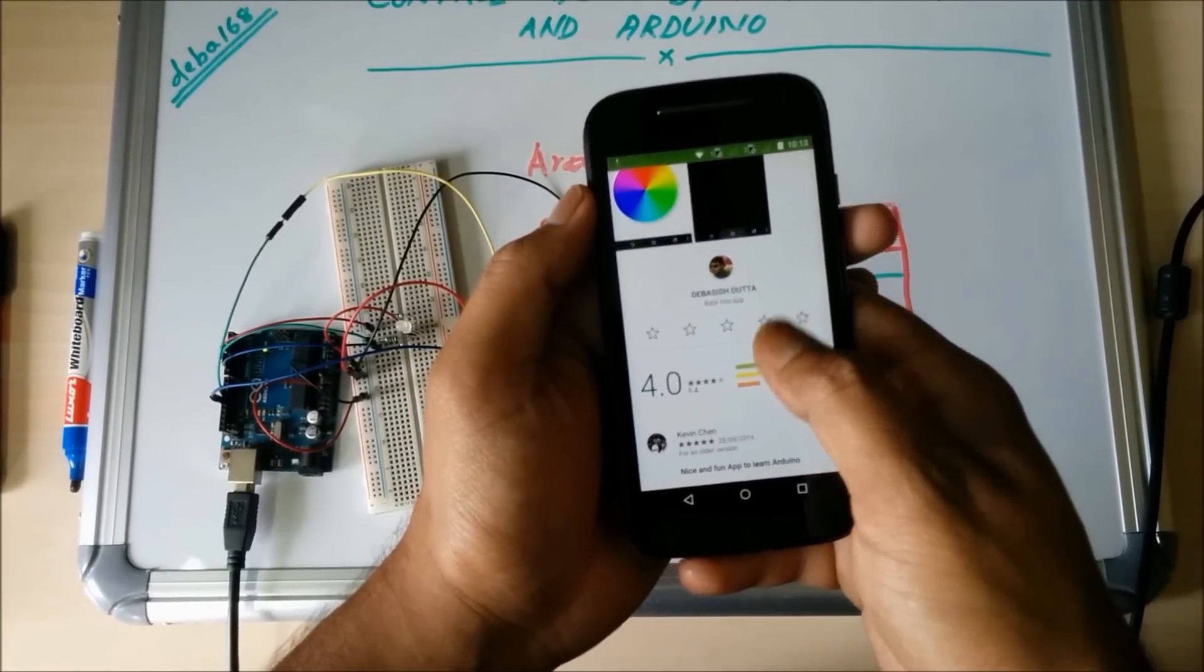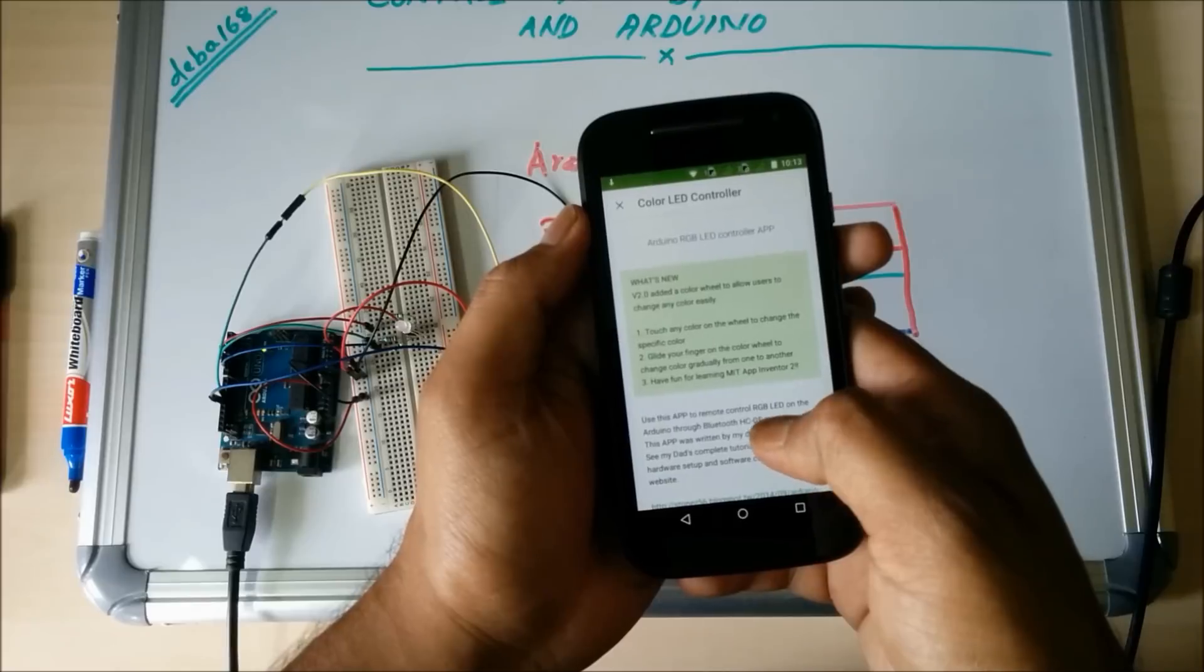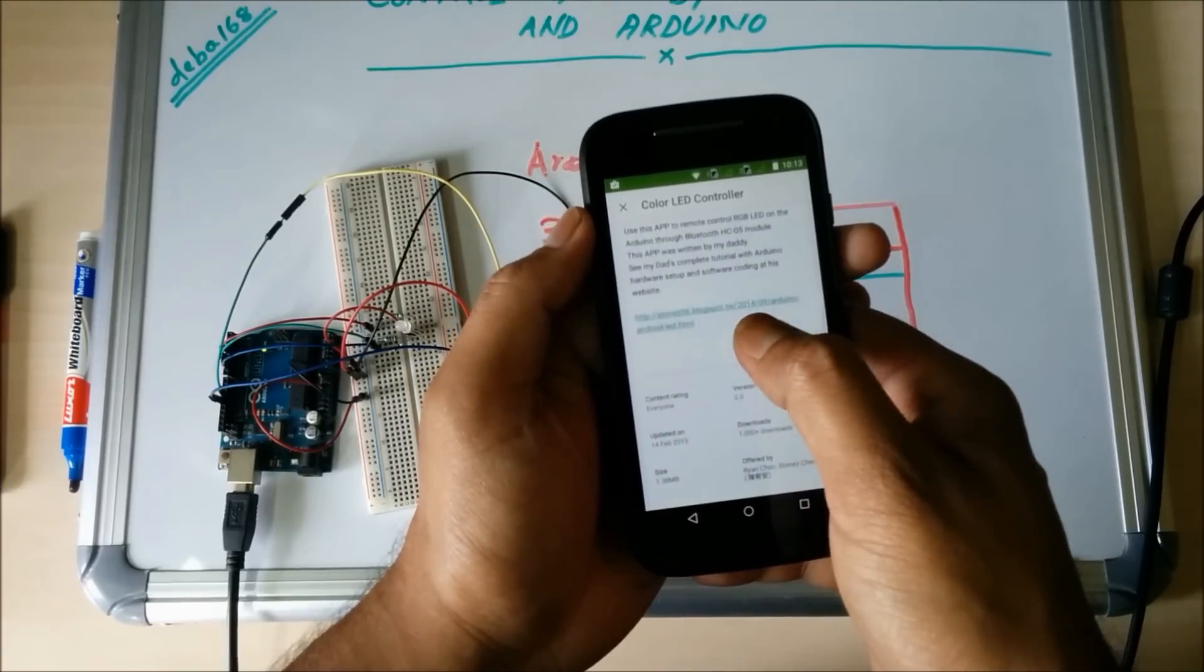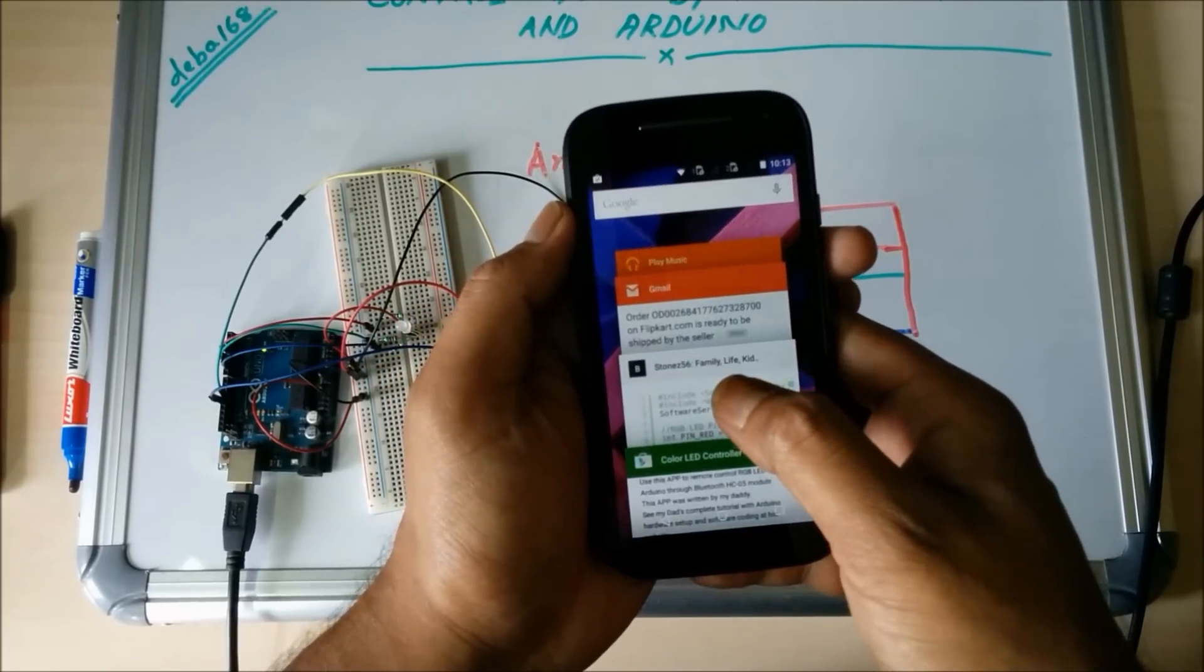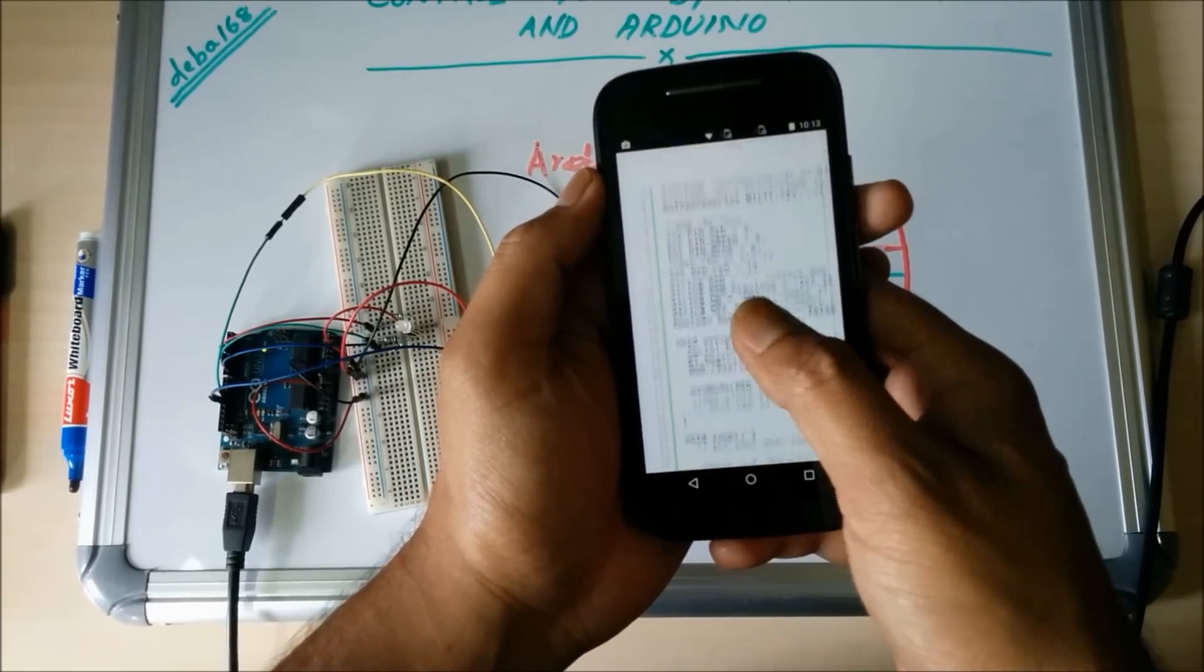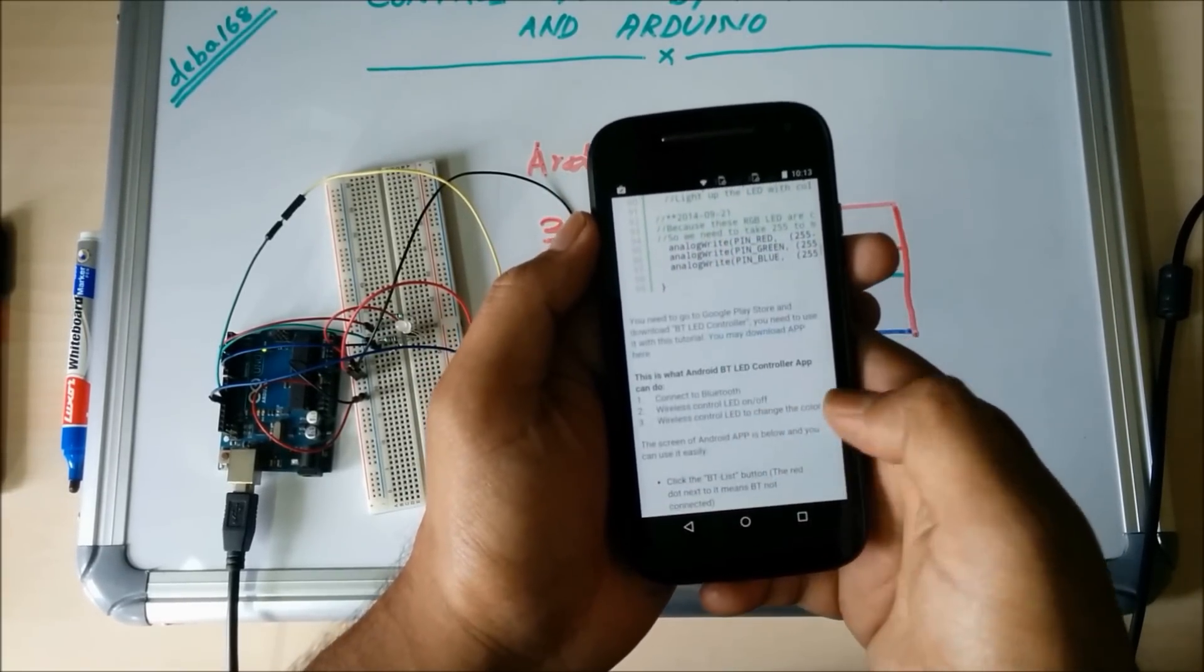For more information you have to click the read more button. Here is the link. In this link you can get lot of information. It gives the schematic, the Arduino code, everything.